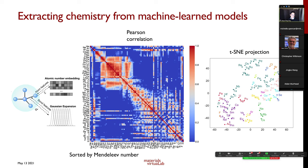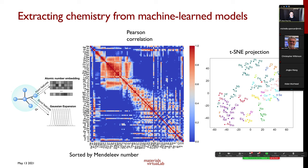A t-SNE projection also shows very clear grouping of elements based on chemical properties: alkaline metals cluster together, rare earths cluster together, transition metals cluster together. In other words, the machine learning model, through trying to learn the relationship between input structure and formation energy, has learned something new — the relationship between different elements. This is knowledge we can actually use.